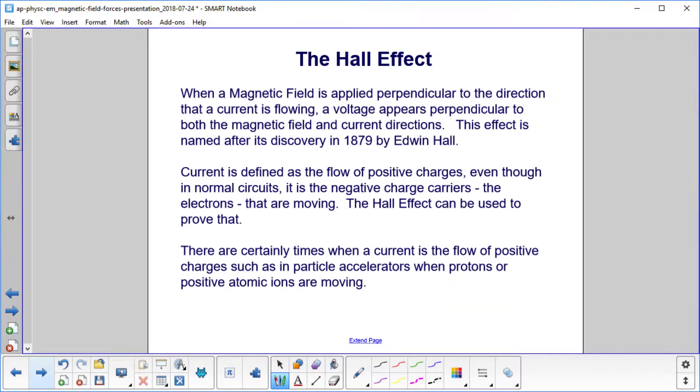The Hall Effect. When a magnetic field is applied perpendicular to the direction that a current is flowing, a voltage will appear perpendicular to both of them. This effect is named after its discovery in 1879 by Edwin Hall.